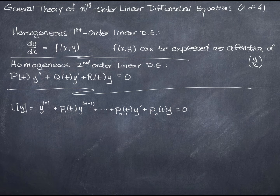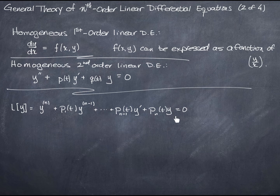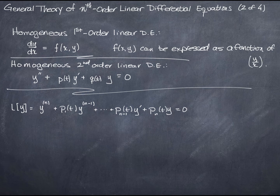If I divide everything through by P of t and get a leading coefficient of 1, I'm going to say that Q divided by P is just P of t, and R divided by P we'll call Q of t — notice those are lowercase letters. So this is the definition of a homogeneous linear differential equation if it's second-order, and this is the definition if it's of any order higher than 1. Since n can be 2, I can absorb this definition into the general one. This is our general definition for what it means to be a homogeneous nth-order linear differential equation.